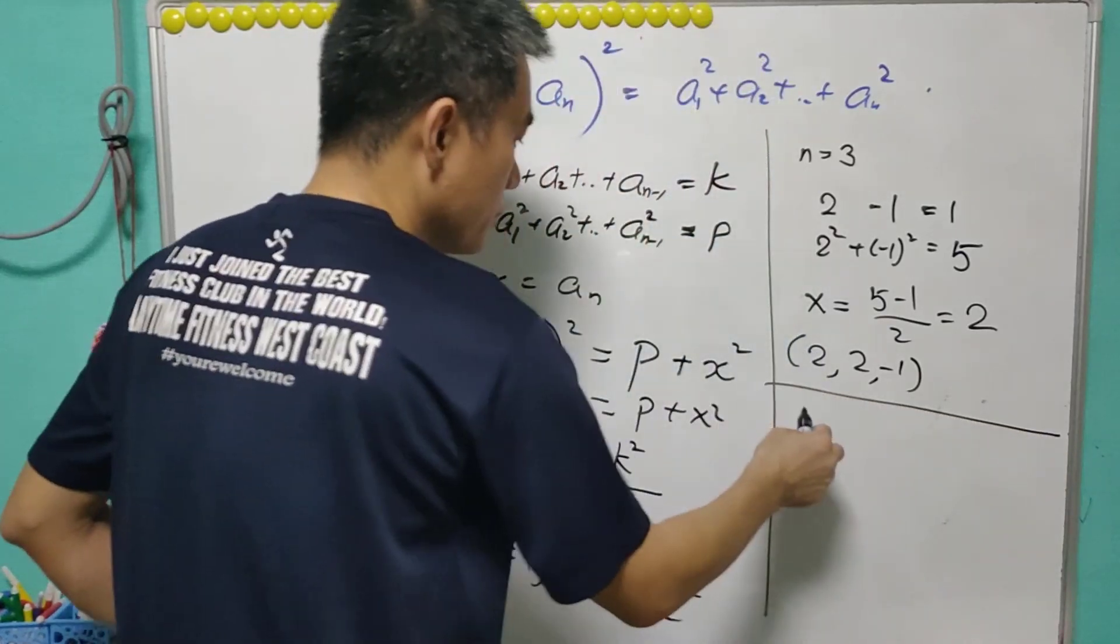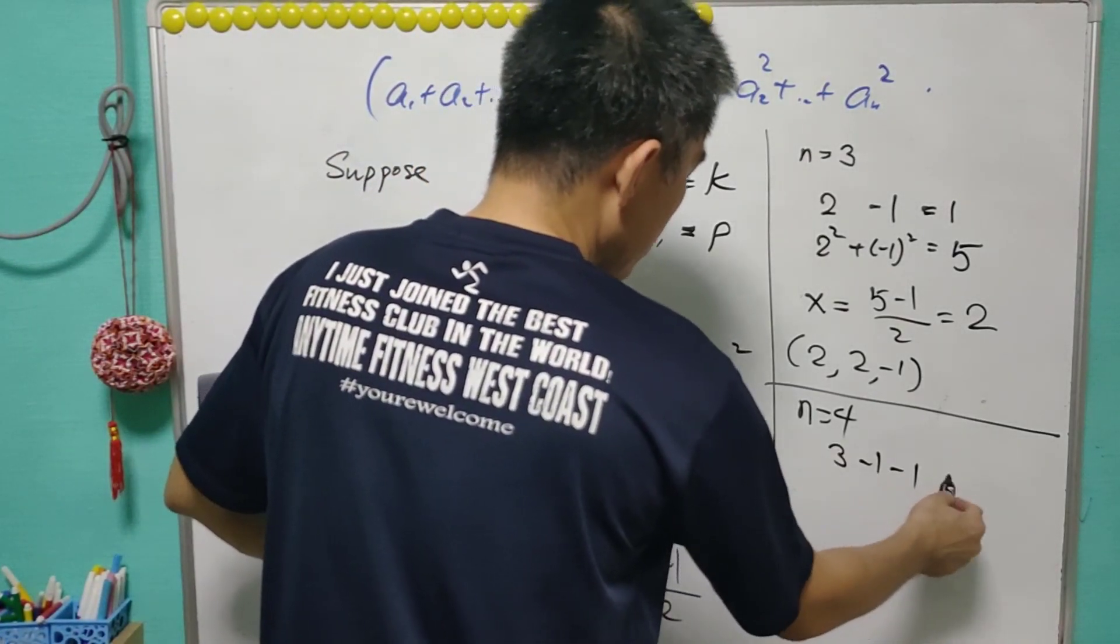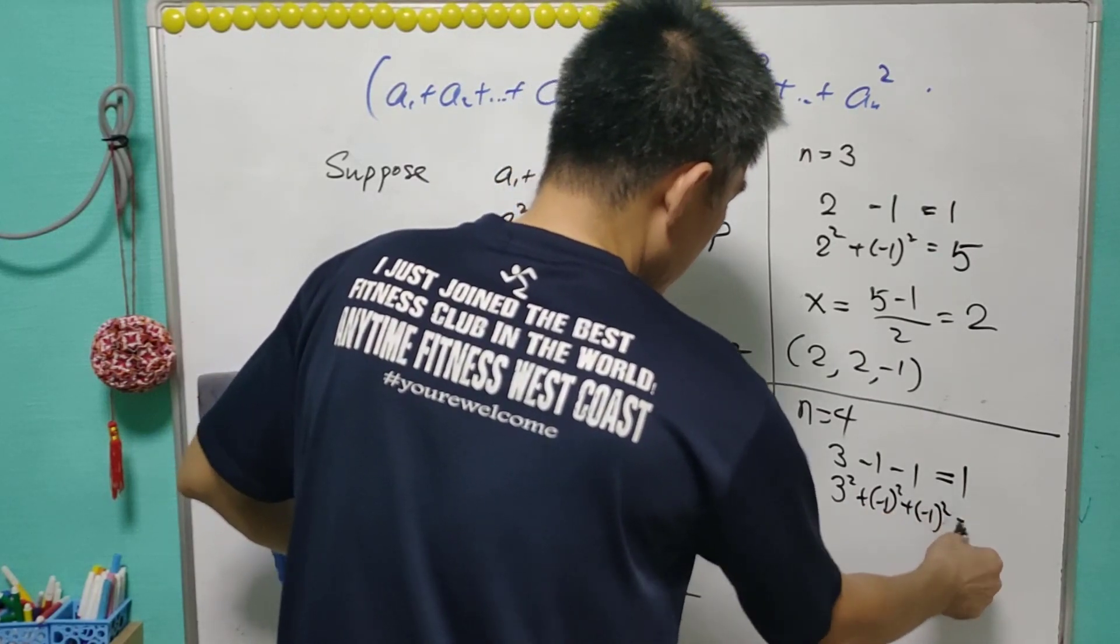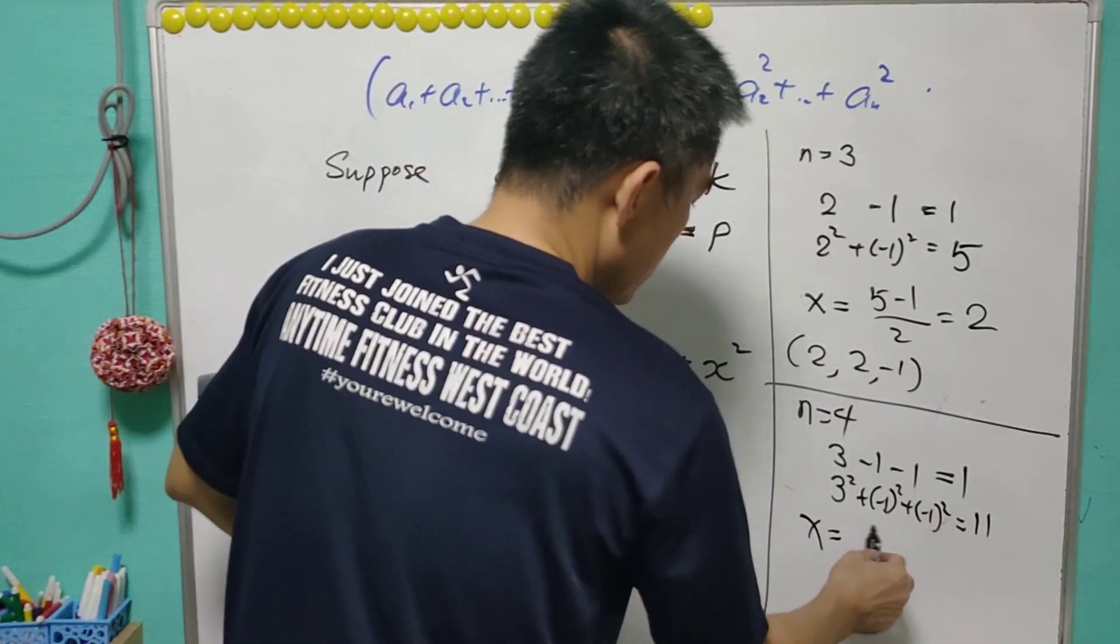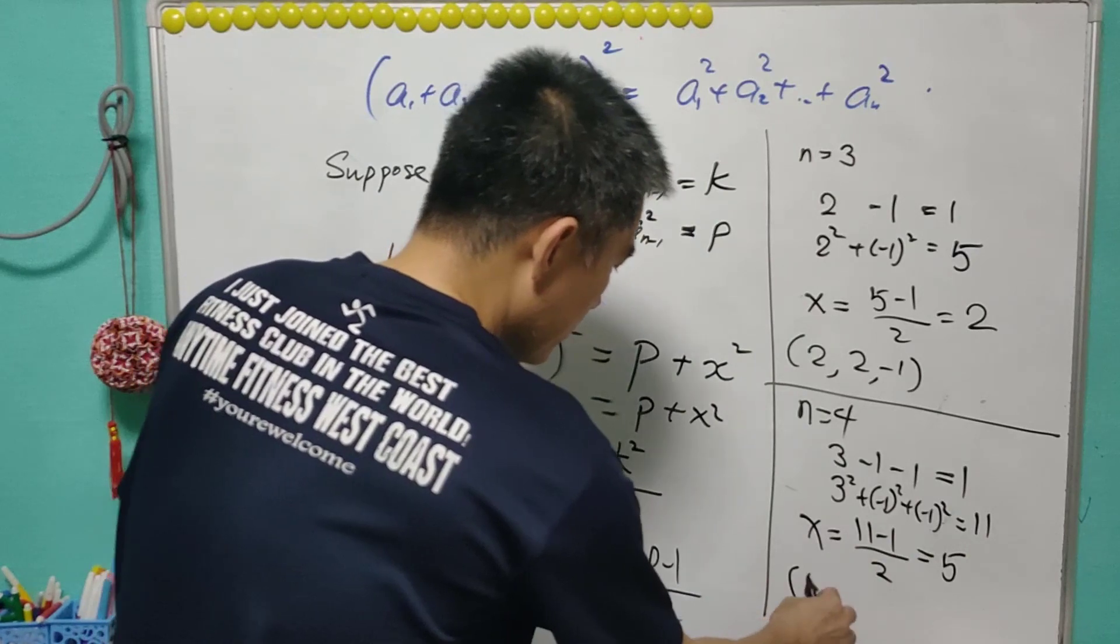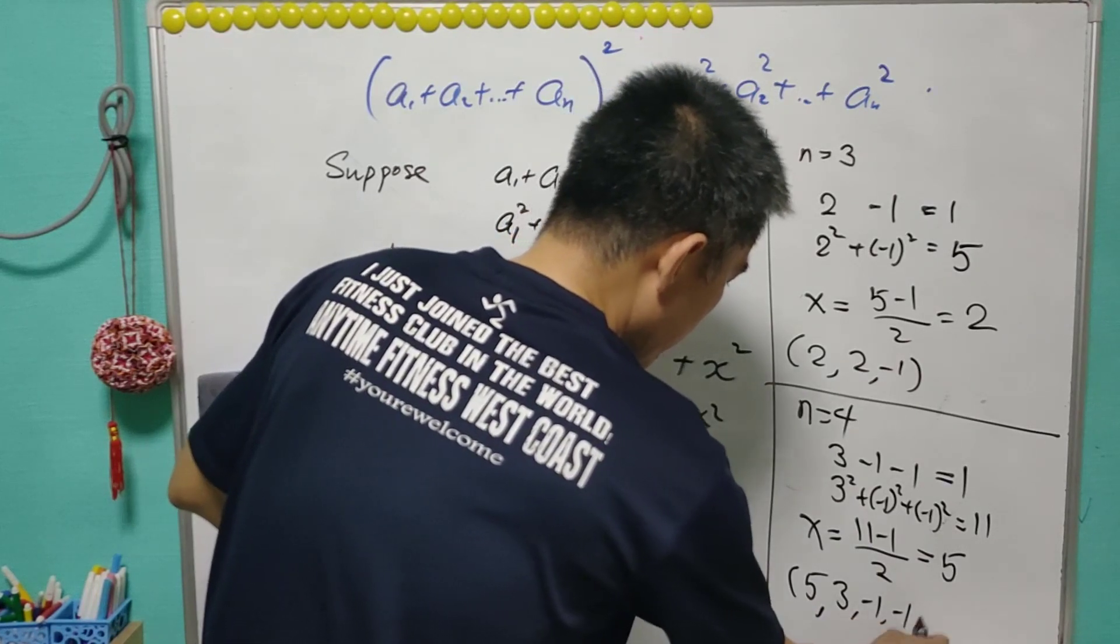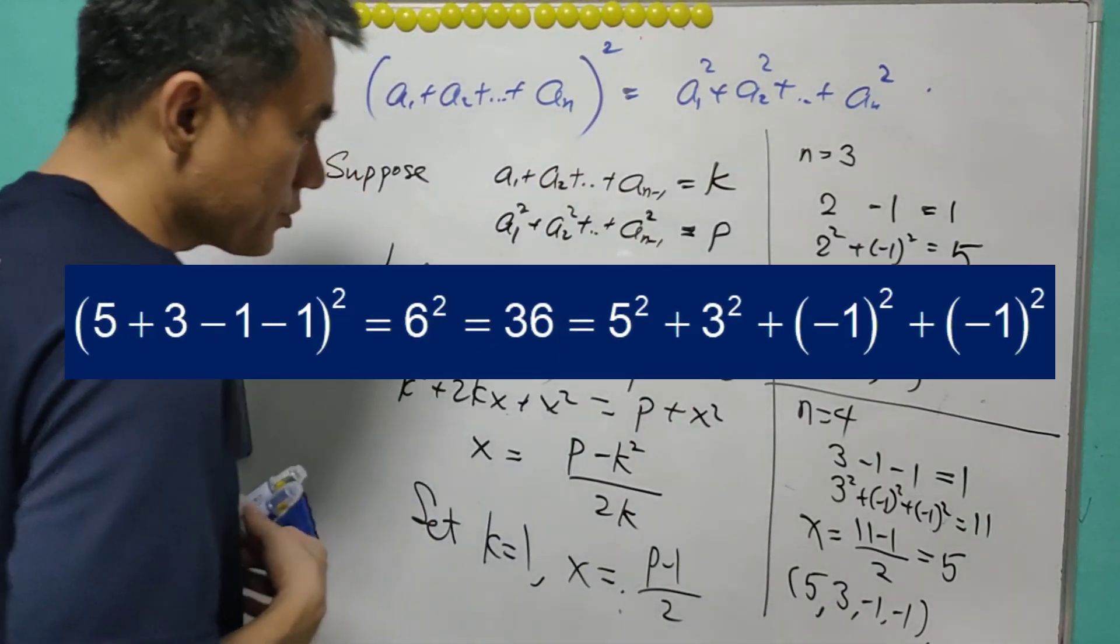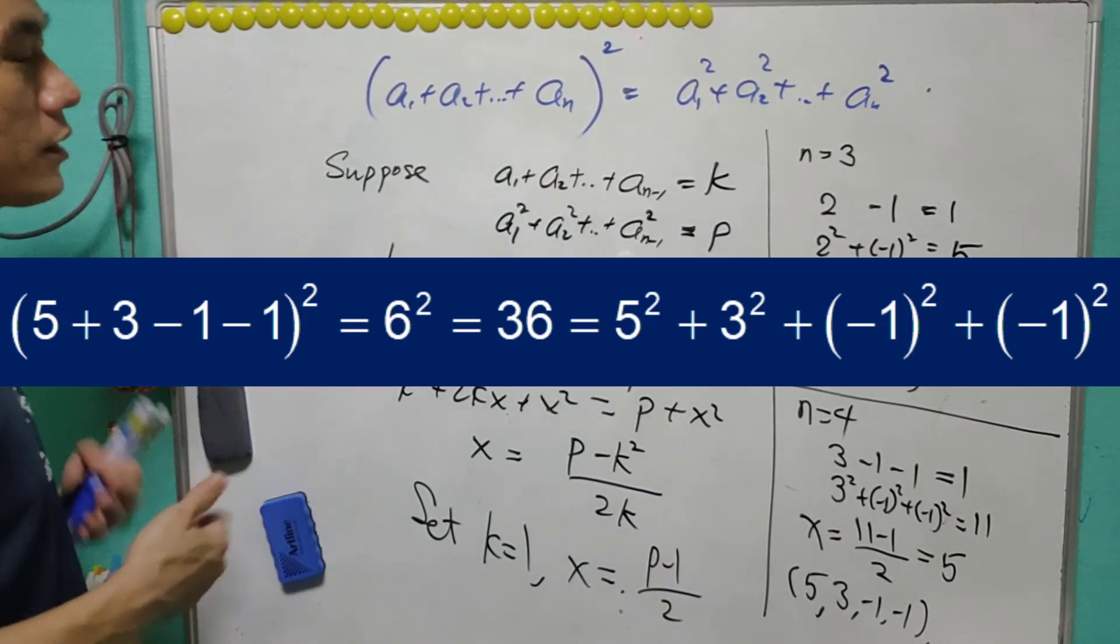Now we may proceed to n equals to 4 and k equals to 1. So you may think of 3 minus 1 minus 1 that is equal to 1. 3 square plus negative 1 square plus negative 1 square, it is equal to 9 plus 1 plus 1. That is 11. So from there, x will equal to 11 minus 1 over 2, and that is equal to 5. You can check that a, b, c, d: 5, 3, negative 1, negative 1 will fulfill the condition. That is the square of 5 plus 3 minus 1 minus 1 equals to 5 square plus 3 square plus negative 1 square plus negative 1 square.